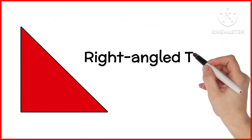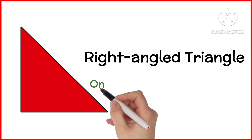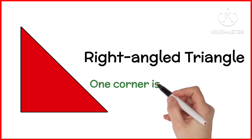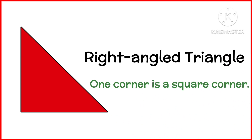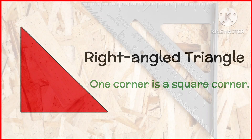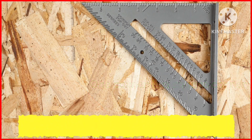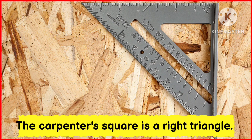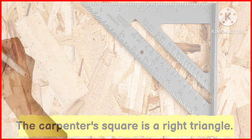Right Angle Triangle. One corner is a square corner. The carpenter's square is a right triangle.